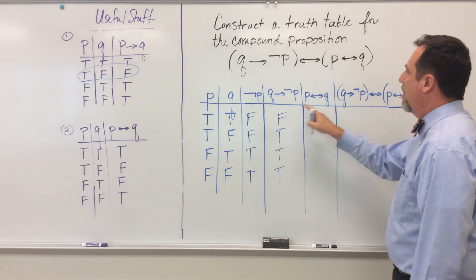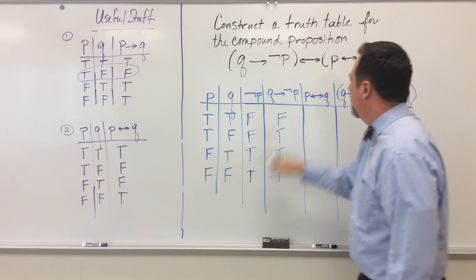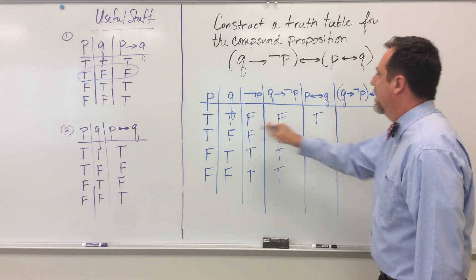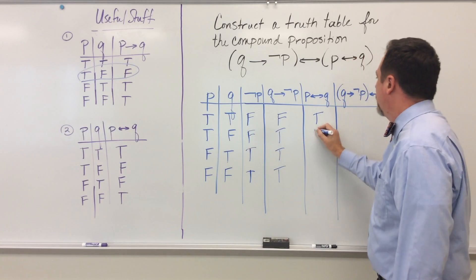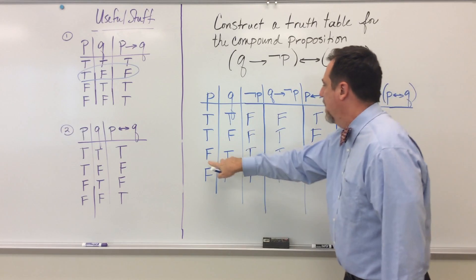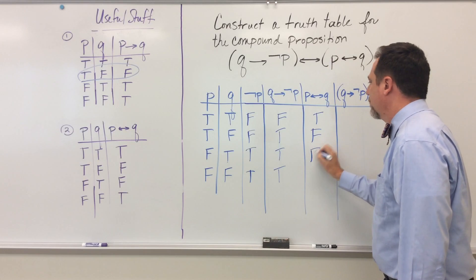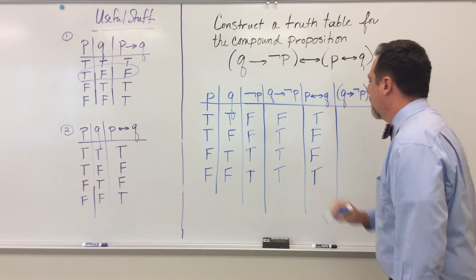And so it turns out that all I have to do is look over in these two columns. Here's my P and Q. And that's going to be true because they have the same truth values. They're different here. P and Q have different truth values here in this row, but they have the same value here. All right.